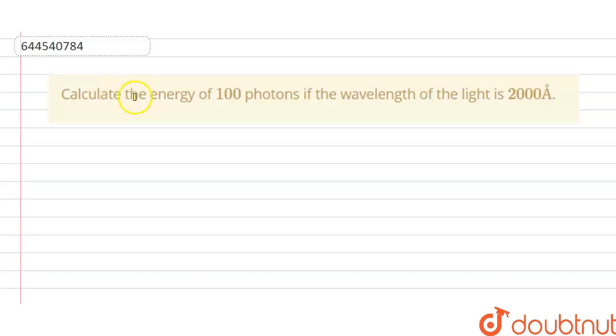Hello students, today our question is calculate the energy of 100 photons if wavelength of light is 2000 angstrom. So the solution of this question is,